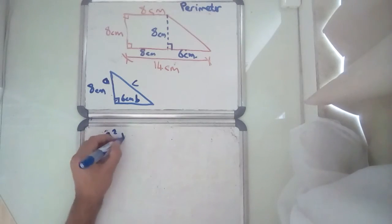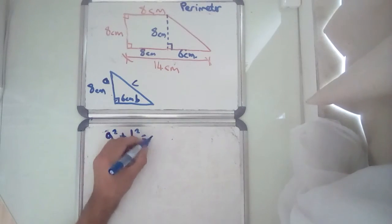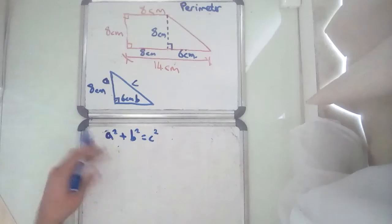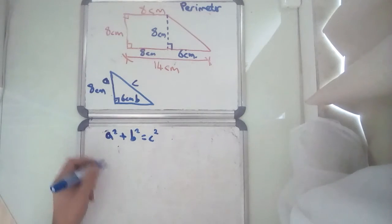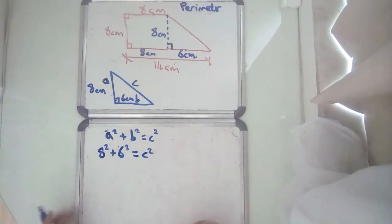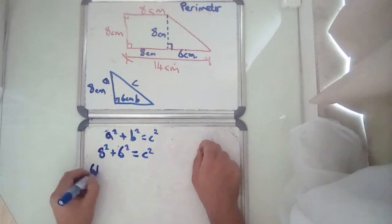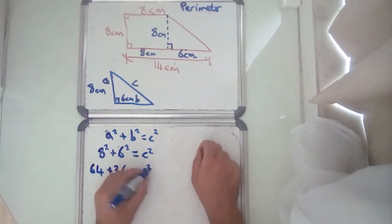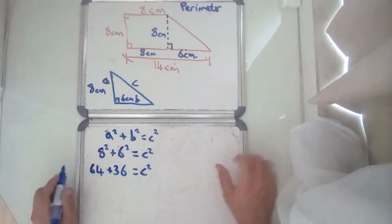So, A squared plus B squared equals C squared, in any right angle triangle where C is the long side, so 8 squared plus 6 squared equals C squared. 8 squared is 64, 6 squared is 36, equals C squared. Well, 64 plus 36 is 100, so 100 equals C squared.